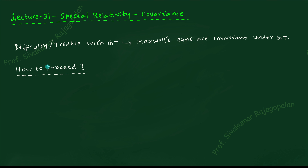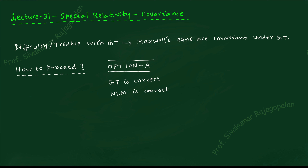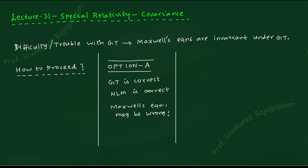That statement is from the last class. Now, what to do? Let me write down how we are going to proceed — the possible options. It is not straightforward, so we have to think about the possible ways. One option is: we can say that the Galilean transformation is correct and then try to throw the blame on someone. So, possible options: Newton's laws of mechanics are correct but Maxwell's equations could be wrong.